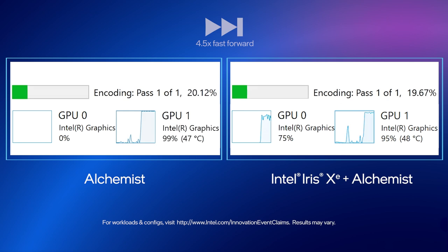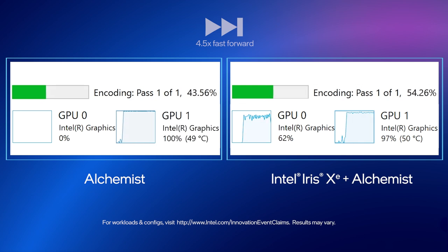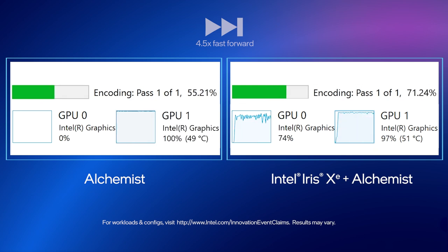Notice on the right how the DeepLink system is fully saturating both the integrated GPU and the discrete Alchemist GPU. And you can see the increase in transcoding speed as you notice the progress bar is zipping along on the right side.